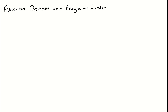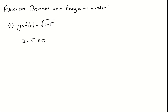For example, number one: let y be some function of x equal to the square root of x minus 5. We know from the introductory video that we cannot take the square root of a negative number. That means x minus 5 has to be greater than or equal to 0 — it cannot be negative. So solving this inequality, x has to be greater than or equal to 5.